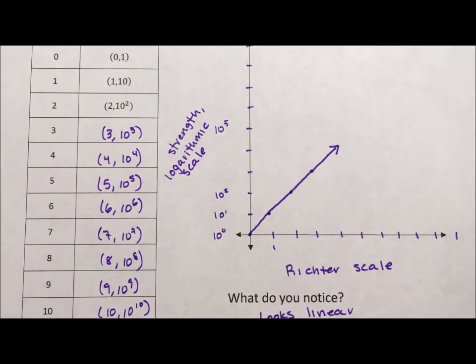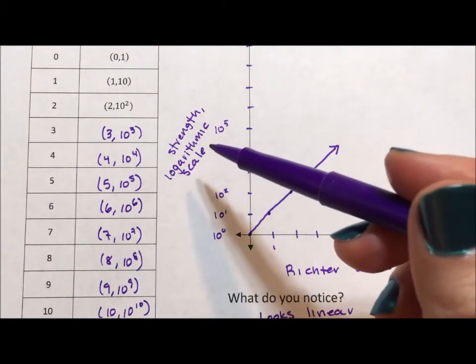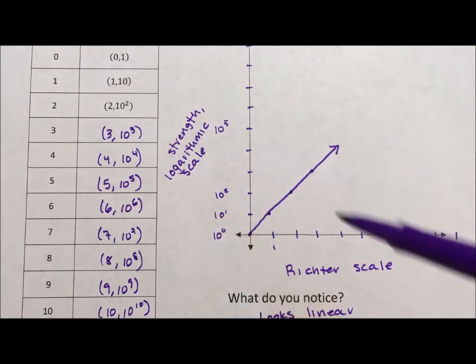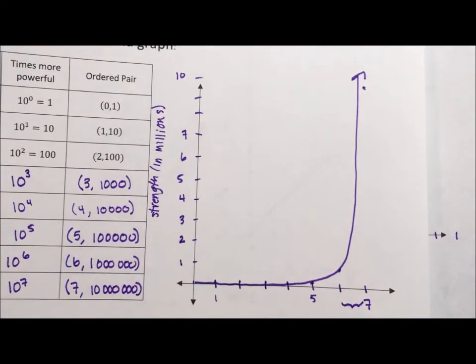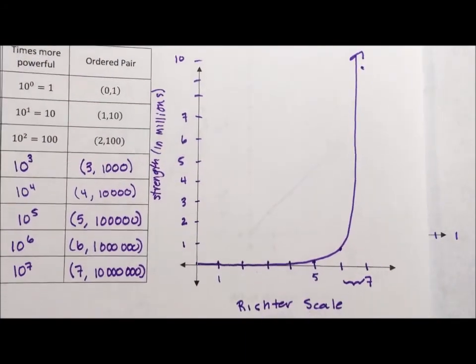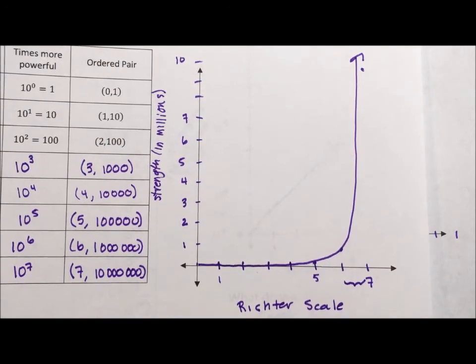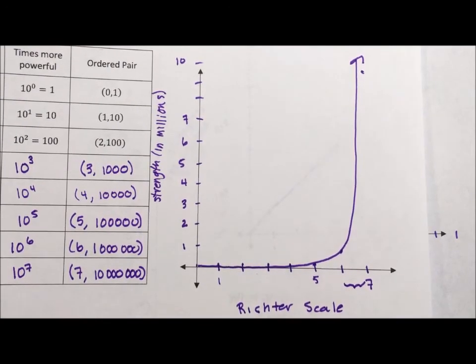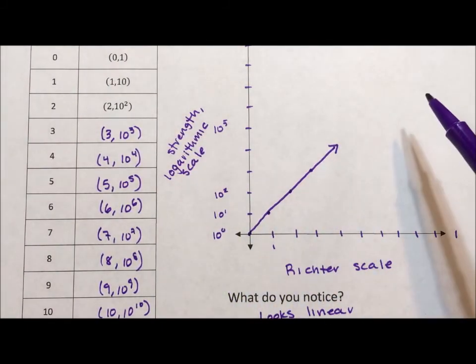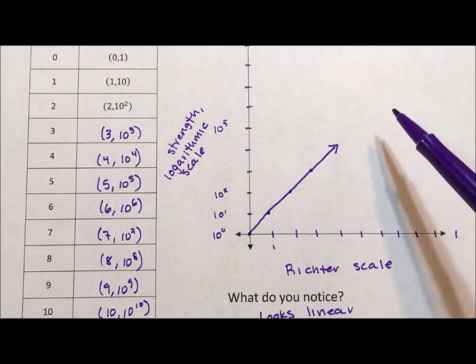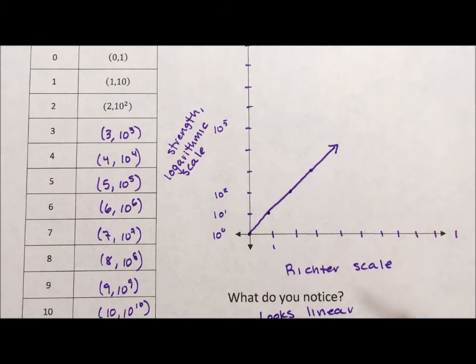Now, I have another video where I did this same graph on a linear scale. And if you haven't seen that video, the difference is on a linear scale, the Richter scale looks very, very exponential since we go up by a multiple of 10 each time versus a logarithmic scale, which creates a linear model for a logarithmic application.